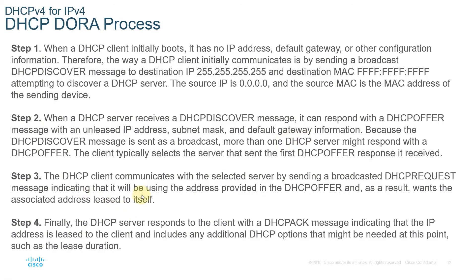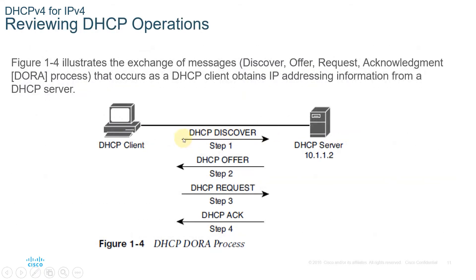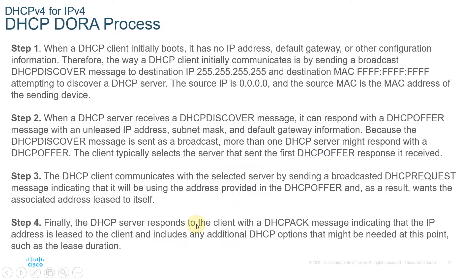Step three is DHCP Request. The DHCP client communicates with the selected server by sending a broadcast DHCP Request message indicating it will use the address provided in the DHCP Offer. To recap, the sequence is broadcast, unicast, broadcast, and then acknowledgement. Finally, the DHCP server responds with a DHCP Acknowledgement message indicating the IP address is leased to the client, and includes any additional DHCP options needed, such as the lease duration.